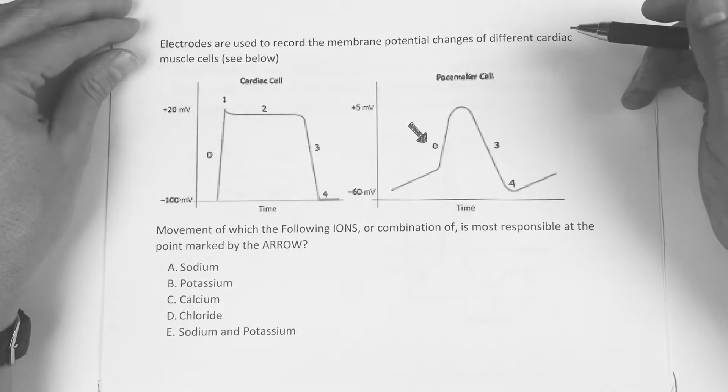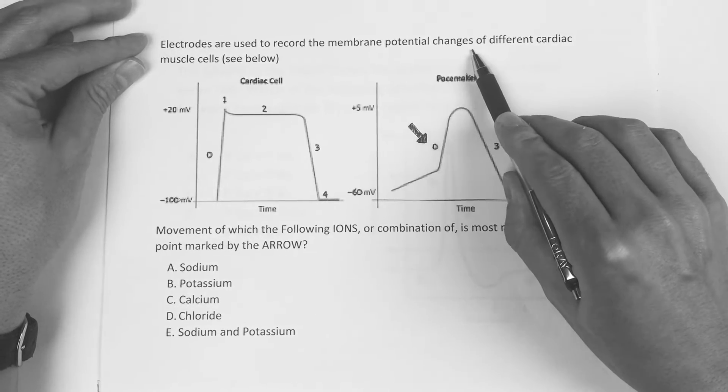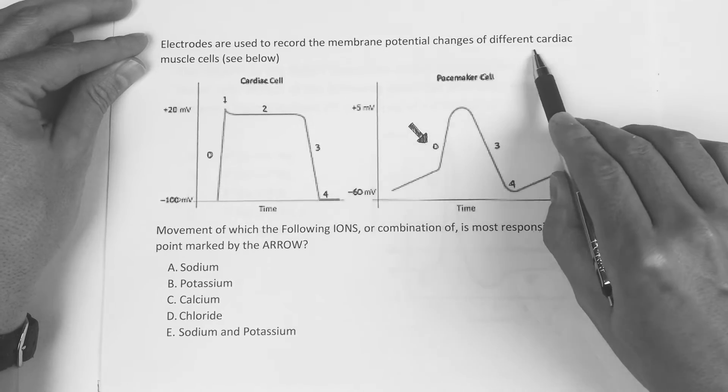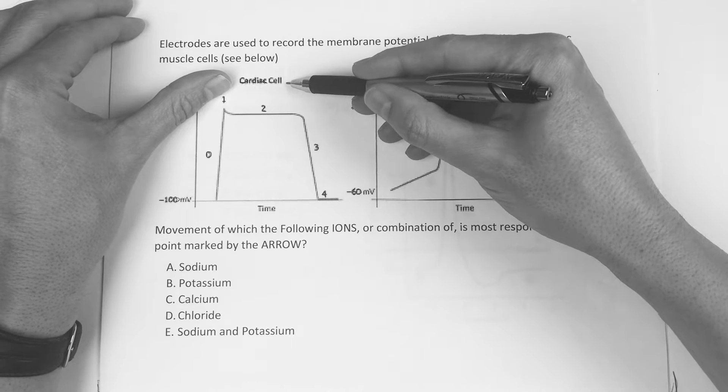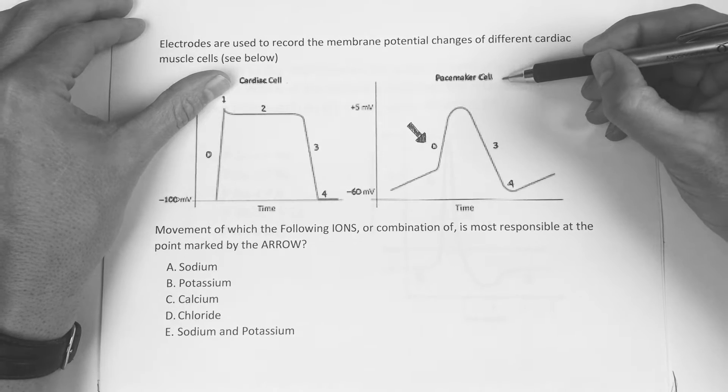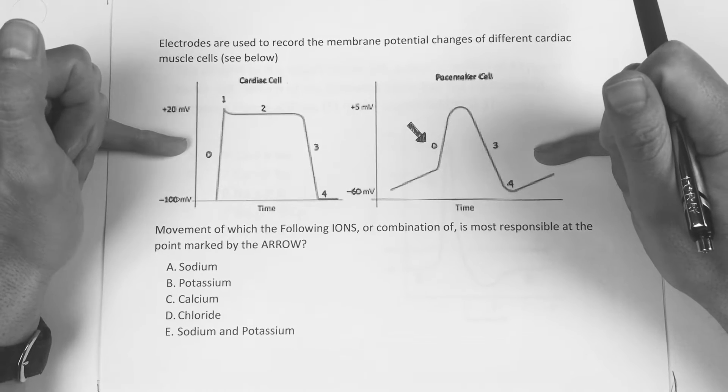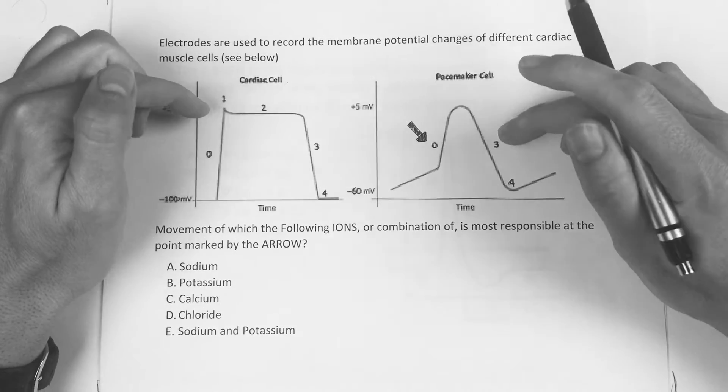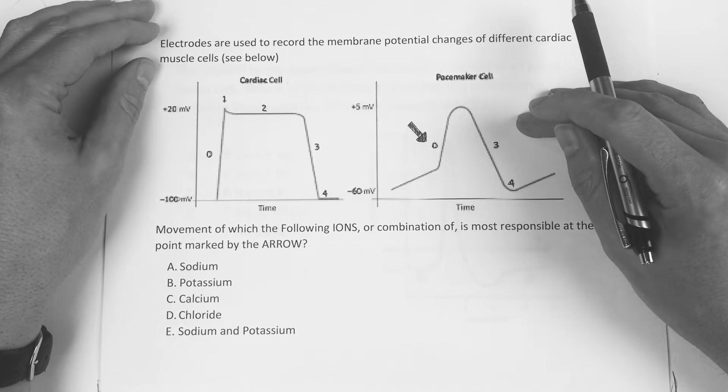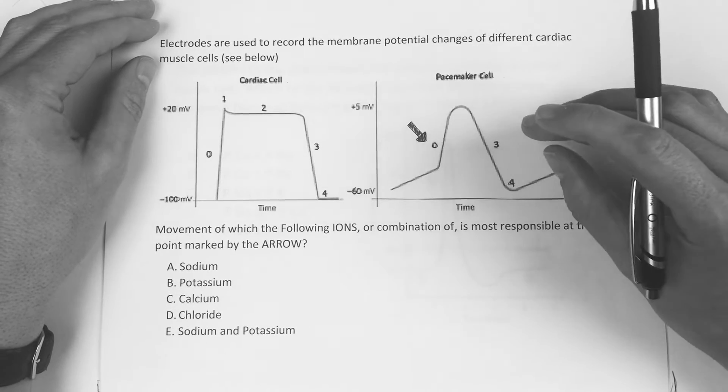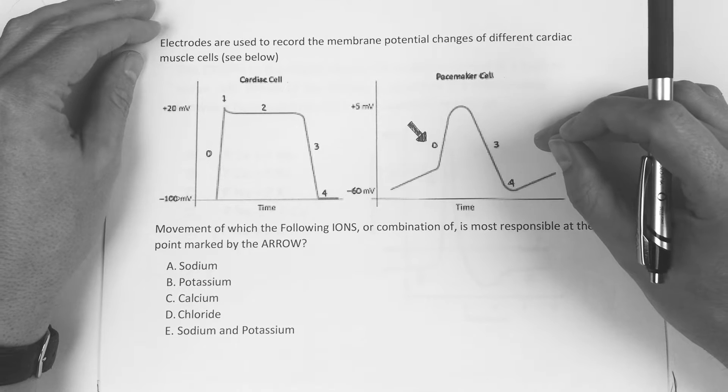Alright guys, so first question reads, electrodes are used to record the membrane potential changes of different cardiac muscle cells. See below. So we have a cardiac cell and a pacemaker cell, and we really have to tell the difference between these two. But before we really get into this, there's really only two real main points I'd say that are the real take homes. Let me show you the beginning of a quick PowerPoint thing that I did when I was teaching this in a live class and see if this makes any sense.